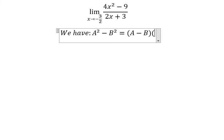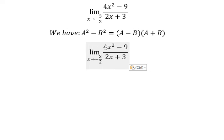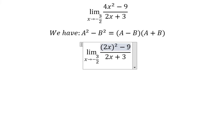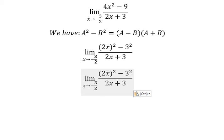For A², we can put (2x)² to the power of 2. Number 9, that's 3². So we apply the formula for this one, and you got (2x - 3) and (2x + 3).